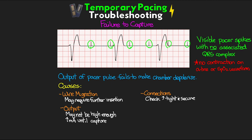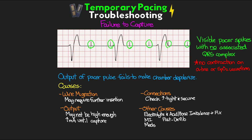There can be a multitude of other potential causes: electrolyte and acid-base imbalances — correct those if they exist; the patient having an MI; post-defibrillation effects; and drugs like flecainide, beta blockers, verapamil, and similar medications. If you see failure to capture, go through this list and work to correct the causes. Most importantly, be prepared to transcutaneously pace and/or initiate CPR if there is no capture and the patient has minimal or no underlying rhythm — this is potentially an emergency situation.